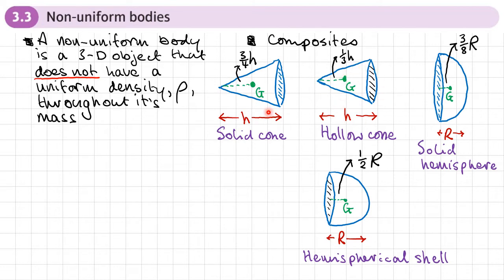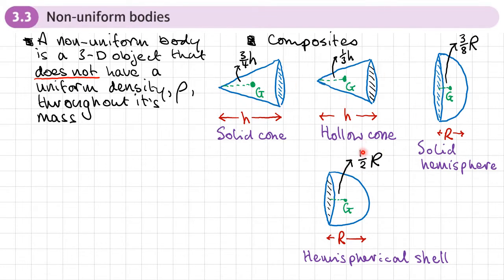We have these standard results. For a solid cone of height H, from the vertex the centre of mass is at three-quarters H. If it's a hollow cone, that distance becomes one-third H. For a solid hemisphere, the distance of the centre of mass from the flat base is three-eighths R. For a hemispherical shell, the distance is one-half R. We can use these standard results where parts of these shapes are put together or subtracted, with different densities such as rho, 2 rho, or 3 rho.